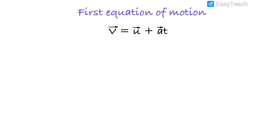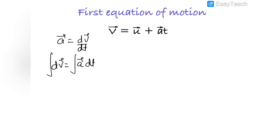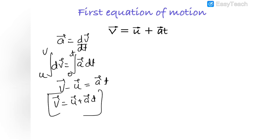The first equation of motion is v = u + at. Here, v is the final velocity after time t, u is the initial velocity before time t, and a is the acceleration during time t. To derive this, we write acceleration a as dv/dt, so dv = a·dt. Integrating both sides with limits v from u to v and t from 0 to t gives v - u = at, therefore v = u + at.